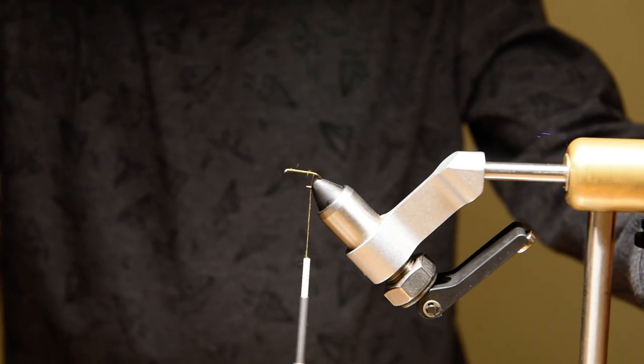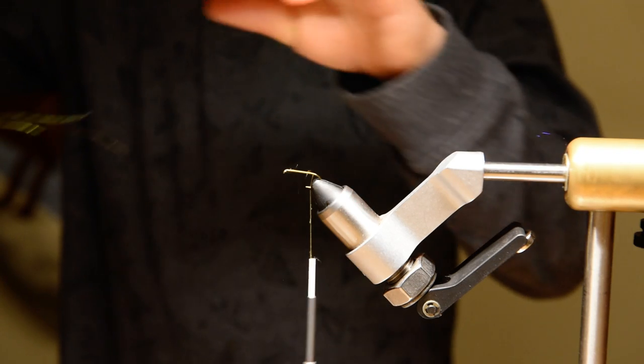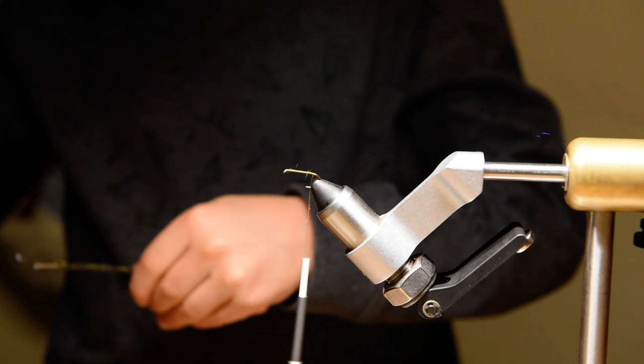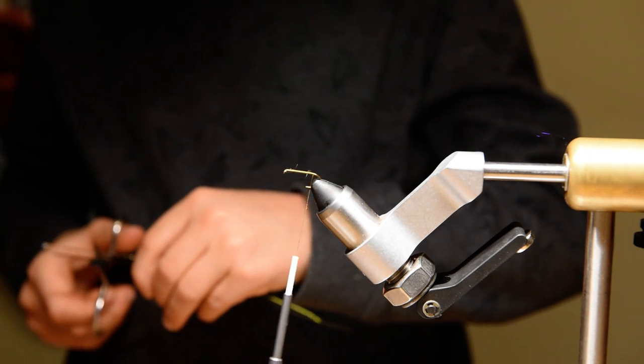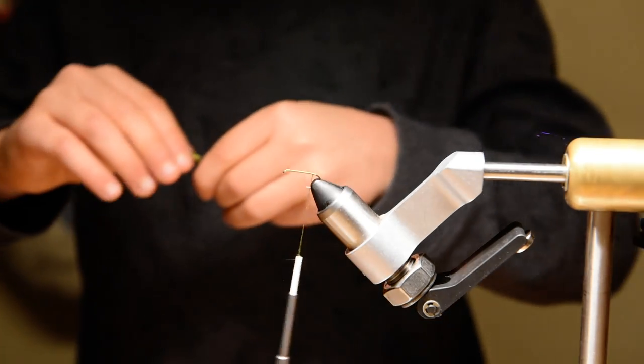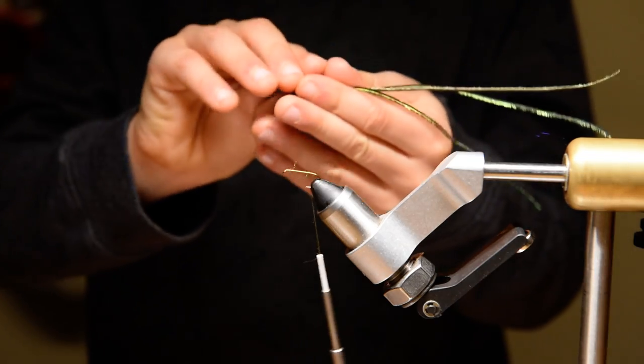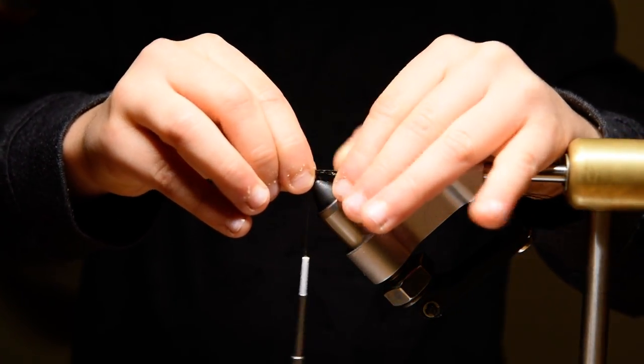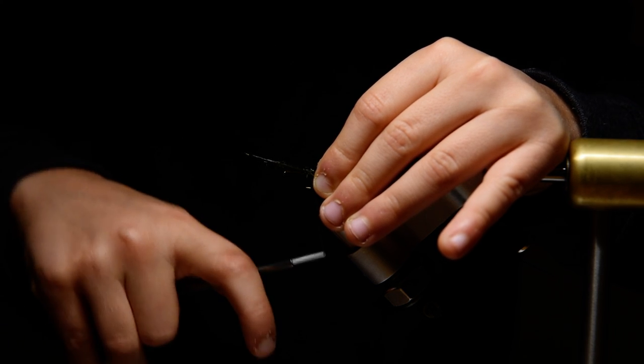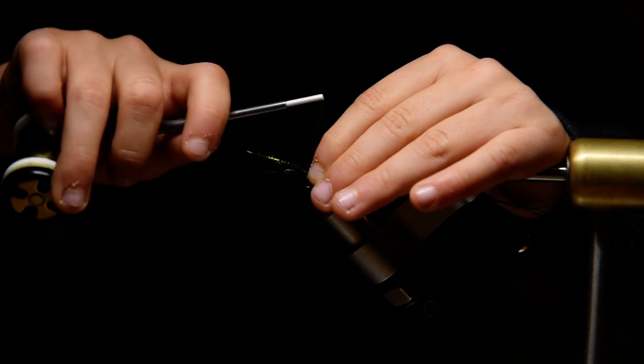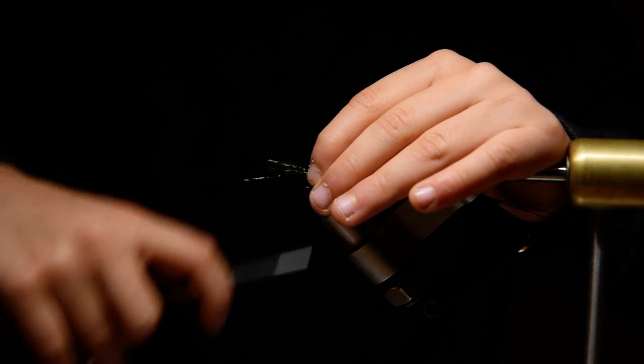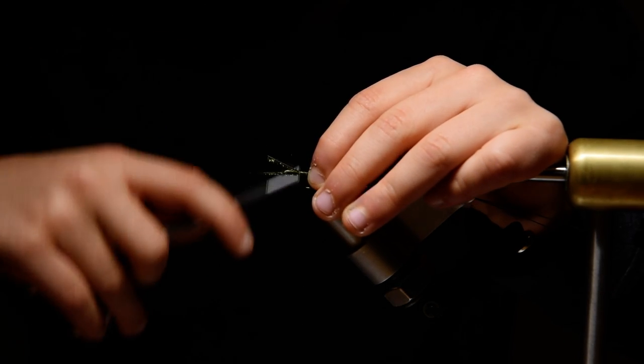Now I'm going to use these three strands of peacock herl. We'll just put them in place and snip the butts off. Now we tie on the butts of the peacock. We just tie that on right where the vise meets the hook. Then we're just going to wrap right up to here where we started our thread.